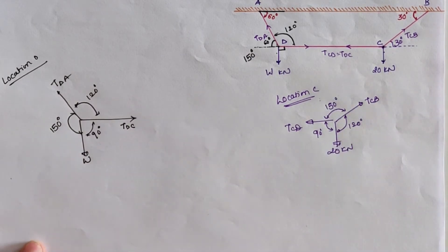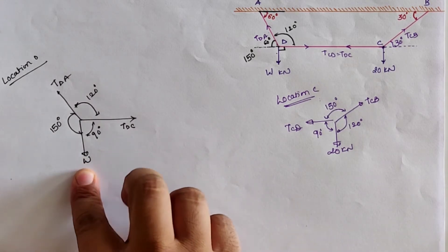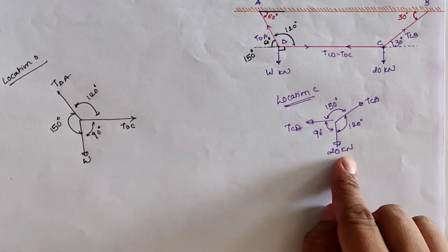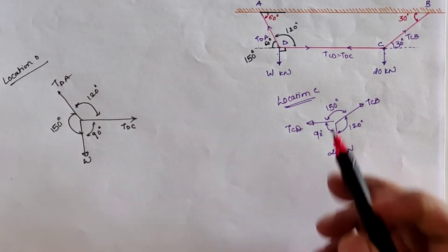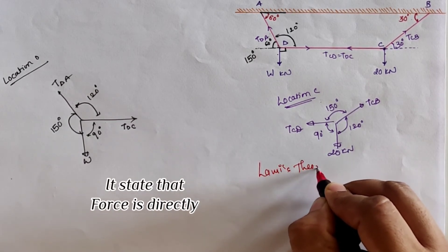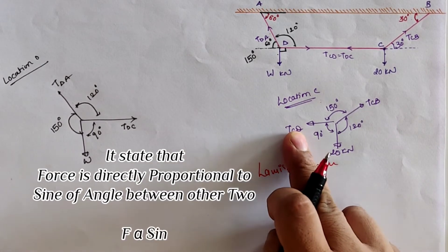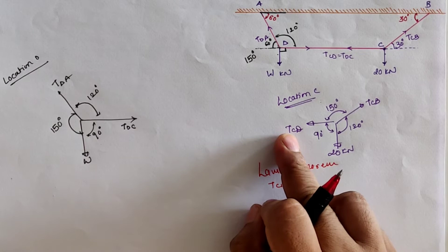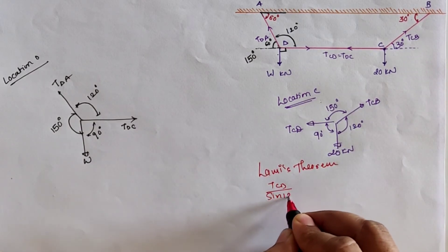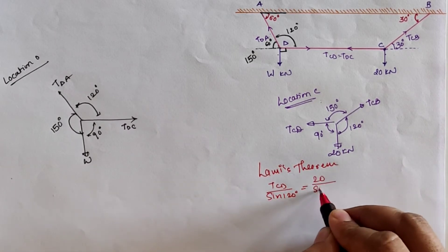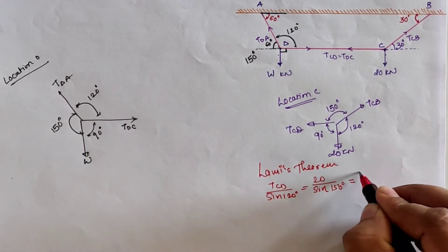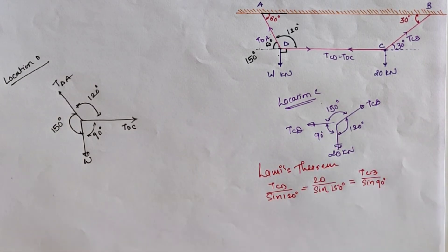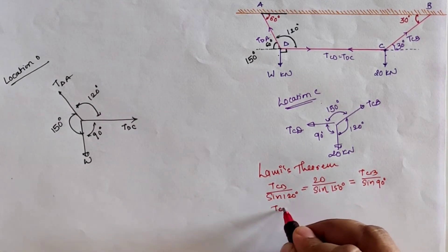Here the unknown values are W, TDC, and TDA — three unknowns. So we cannot solve all three at once. We first take location C, where we know one value. Applying Lami's theorem at location C — which states that each force is proportional to the sine of the angle between the other two — we can write: TCD divided by sine 120 equals 20 divided by sine of the opposite angle, which is 150, equals TCB divided by sine of the opposite angle, which is 90.